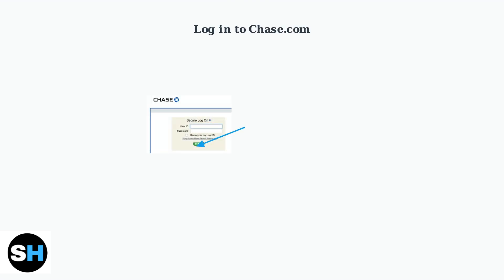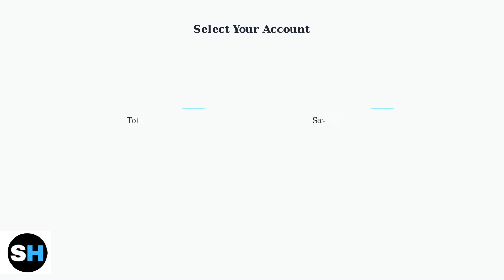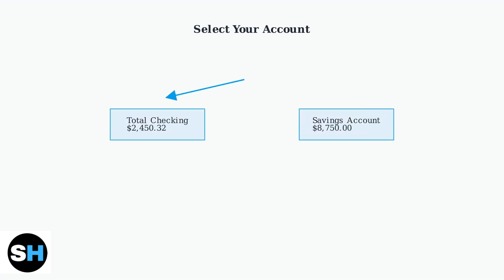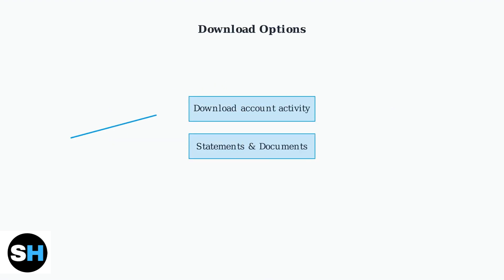To download transaction history from Chase Online Banking, start by logging into your account at chase.com. Once logged in, select the account you want to download transaction history for from your account dashboard. Look for the Download Account Activity or Statements and Documents option, typically found in the account menu or toolbar.